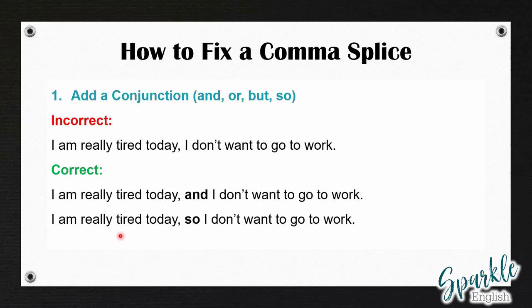Because these are two independent clauses, we still use a comma, but we also have to use a conjunction because the comma alone is not strong enough to link together two independent clauses. This is the first way to fix a comma splice: keep the comma and add a conjunction. If you want a full video on all the ways we use a comma, make sure to click the link in the description below.